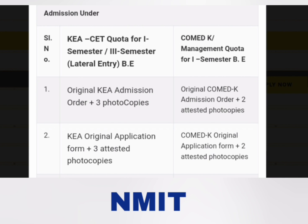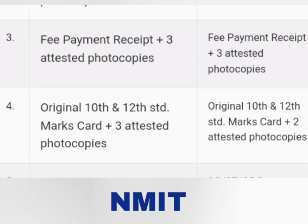The number of copies differs between KCET and COMED-K but the documents are very similar. The third document is the fee payment receipt plus three attested photocopies for KCET students, and the same fee payment receipt plus three attested copies for COMED-K students.